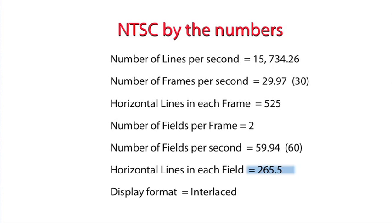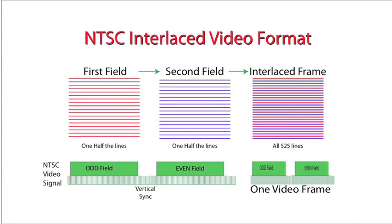The first field carries all the odd lines and the second field carries all the even lines. When combined, the two fields create an entire frame with all 525 lines. It's because of these two fields that NTSC video is interlaced — the two sets of lines in the two fields combine to make an entire frame.